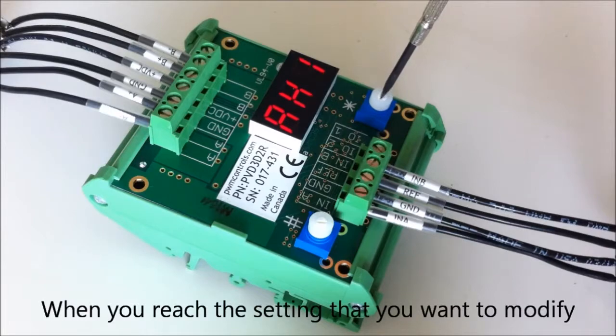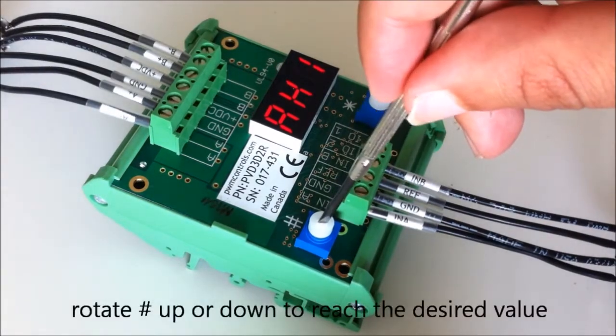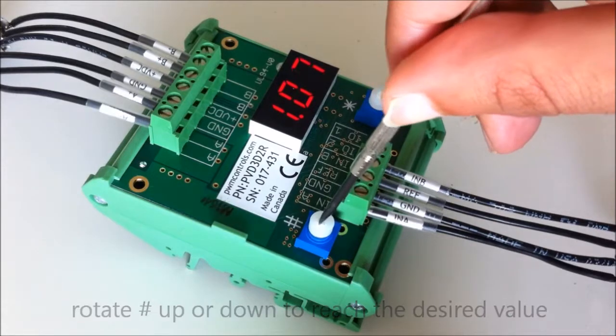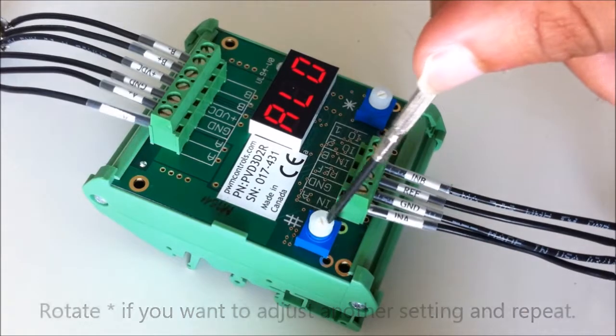When you reach the setting that you want to modify, for example A high, rotate pound up or down to reach the desired value. Rotate star if you want to adjust another setting, and repeat.